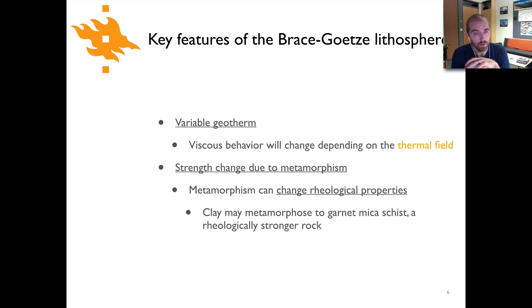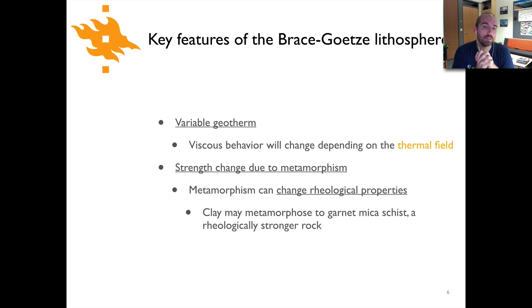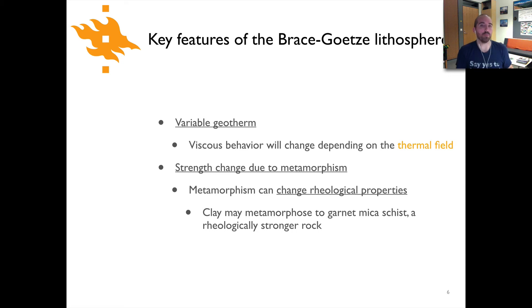There are other ways to modify the strength of the lithosphere. Changing the geotherm — increasing or decreasing temperatures — would cause the viscous strength of the crust to go up or down, influencing overall strength. There are also possibilities to undergo metamorphic reactions that result in different mechanical properties. For instance, clay is generally a fairly weak material, but if you metamorphose clay into a garnet microschist, the rheological strength of the rock will be significantly higher. So undergoing that metamorphic reaction can change the mechanical strength of the rock.